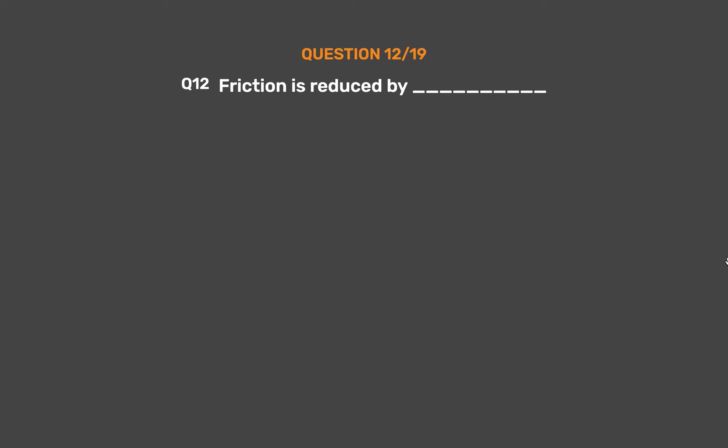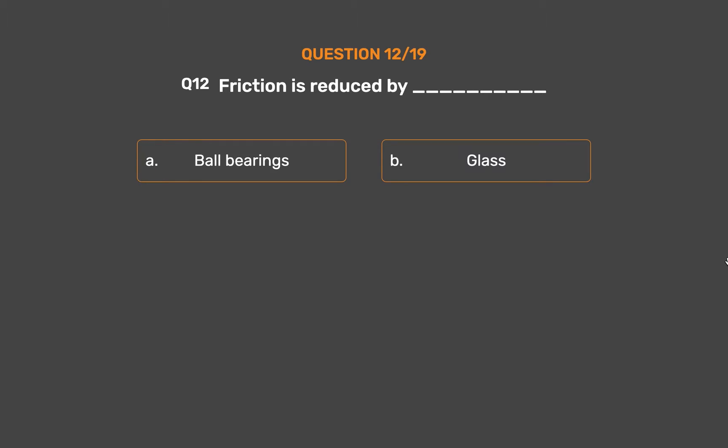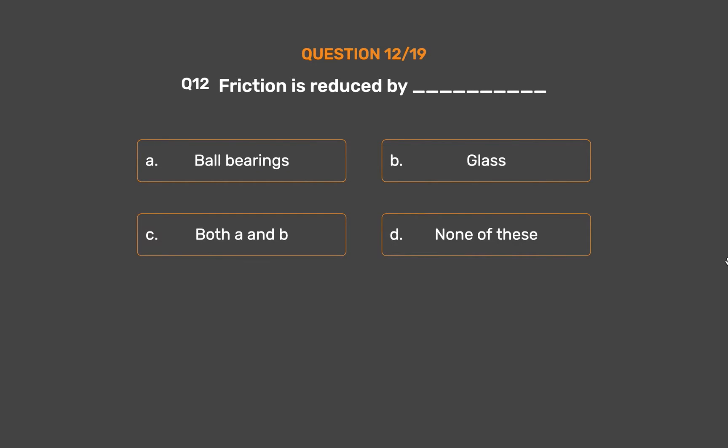Question number 12. Friction is reduced by blank. Option A: Ball bearings. Option B: Glass. Option C: Both A and B. Option D: None of these.